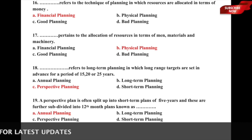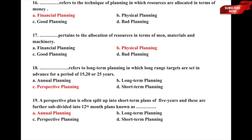Question 17: Dash pertains to the allocation of resources in terms of men, materials, and machinery — whether it is a) financial planning, b) physical planning, c) good planning, or d) bad planning. The correct answer is option b) physical planning, since men, material, and machinery are the resources involved.